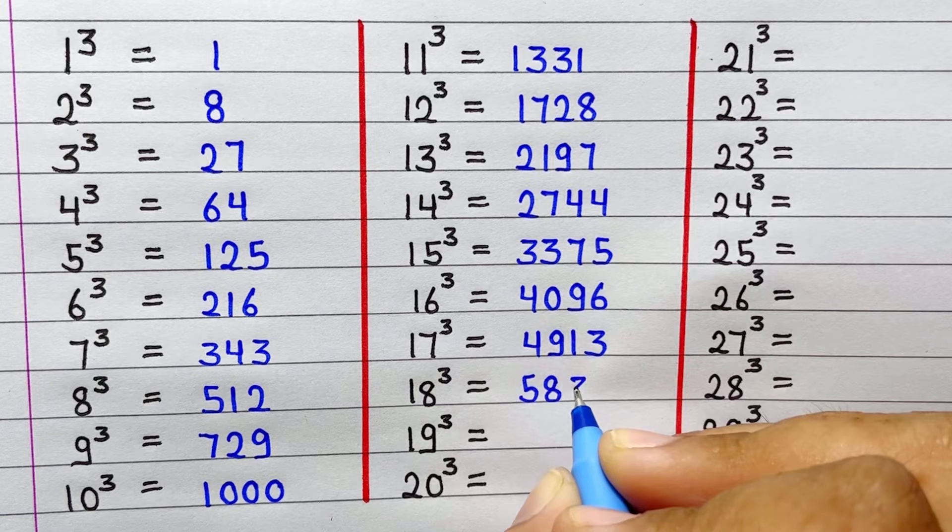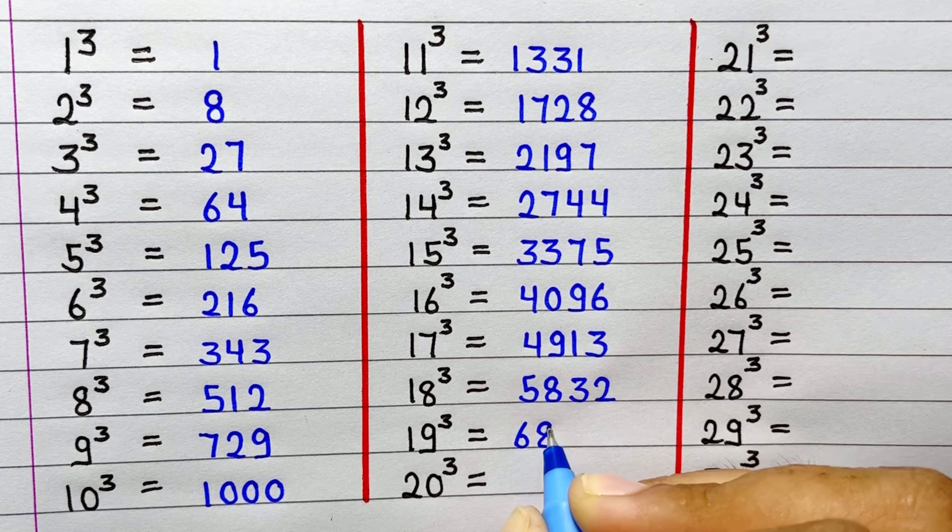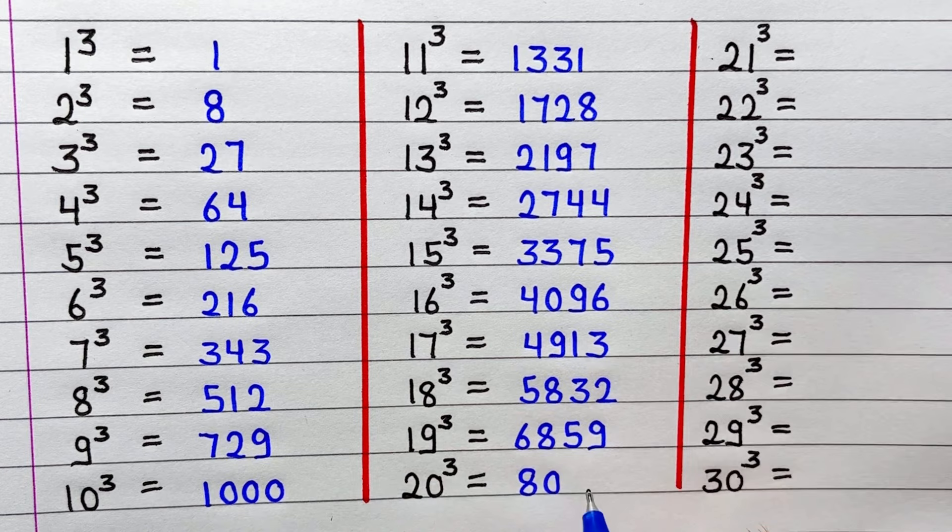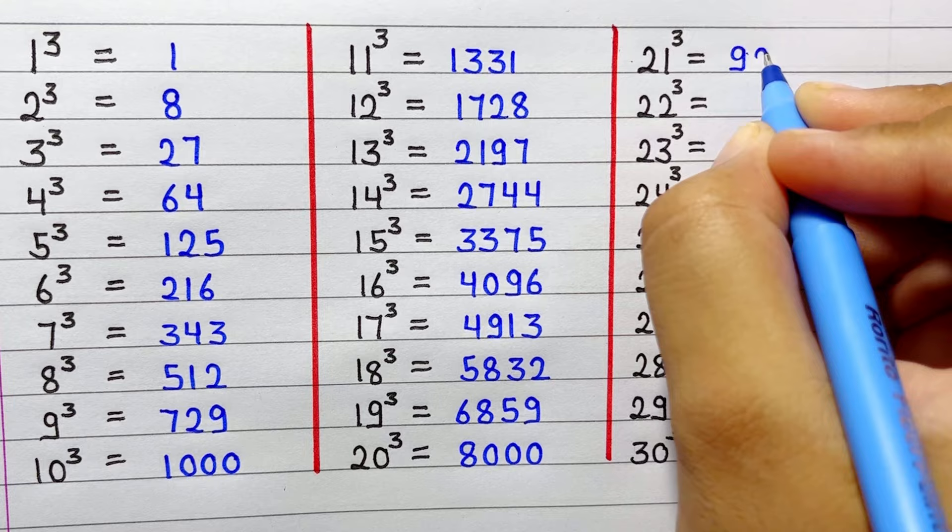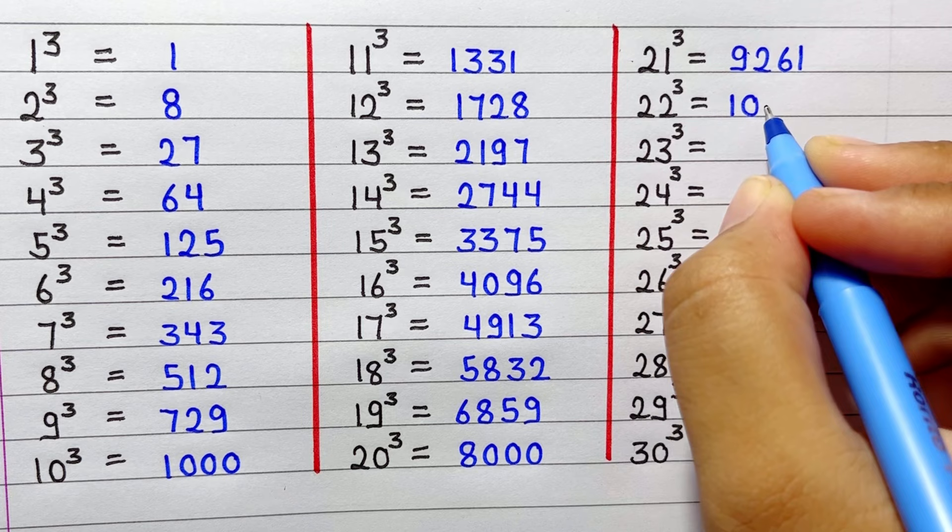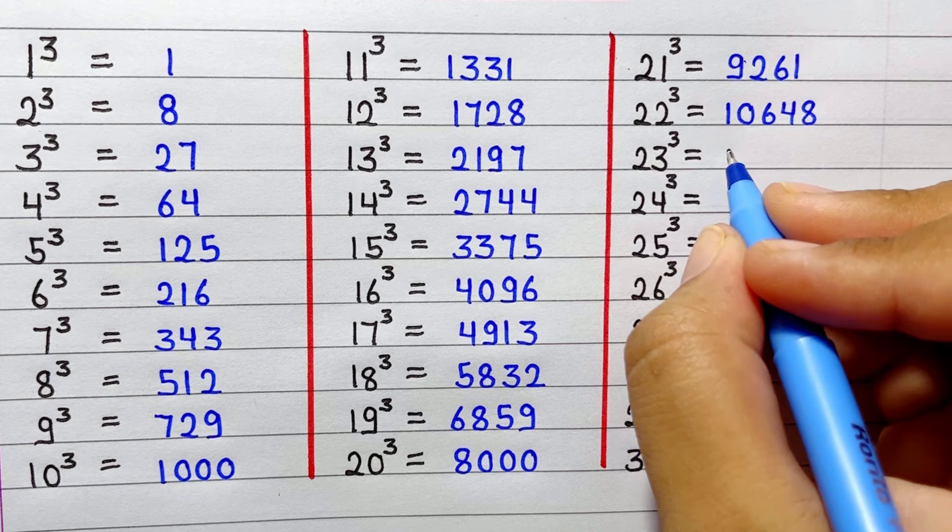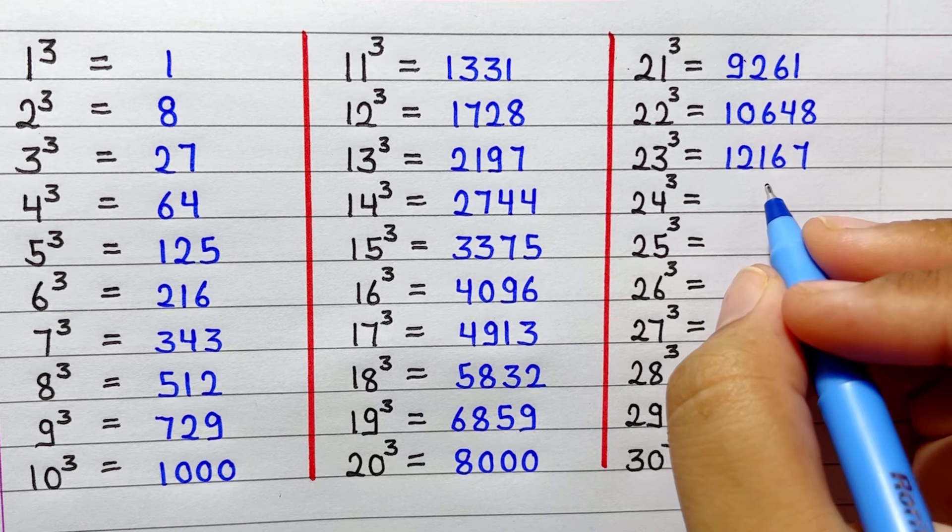Cube of 19 is 6859. Cube of 20 is 8000. Cube of 21 is 9261. Cube of 22 is 10648. Cube of 23 is 12167. Cube of 24 is 13824.